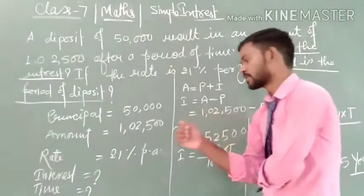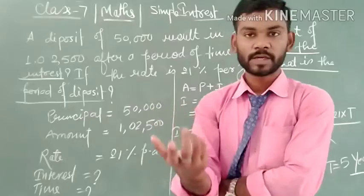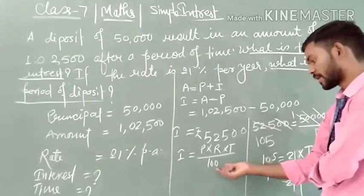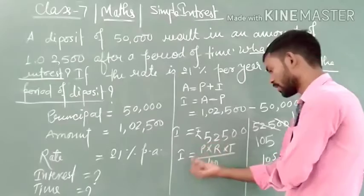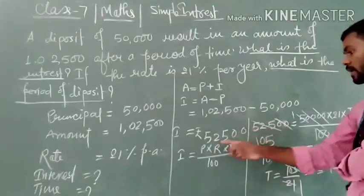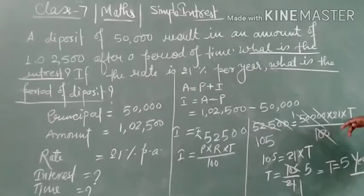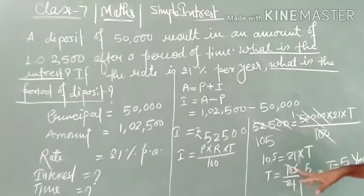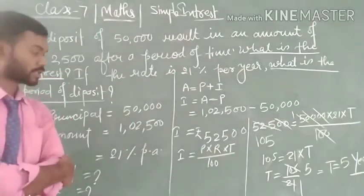Now our next aim is to find the time. Since we know the formula, simple interest equals P multiplied by R multiplied by T upon 100. We put the values: interest is 52,500, P is 50,000, R is 21, and T is unknown, upon 100. After canceling the zeros and simplifying, we get the time equal to 5 years. I hope this question is clear to everyone.